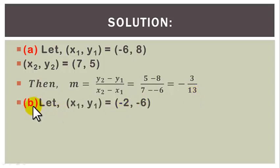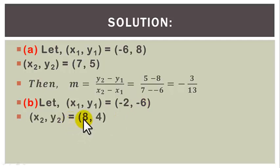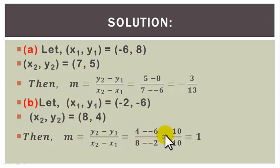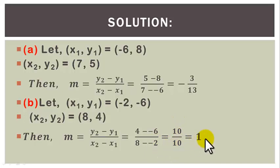B. Let (x1, y1) equal to the point (minus 2, minus 6) and (x2, y2) be the point (8, 4). Then the slope m equals y2 minus y1 all over x2 minus x1, which is equal to 4 minus (minus 6) divided by 8 minus (minus 2). That is 10 divided by 10, which gives us 1. So the slope of that line is 1.